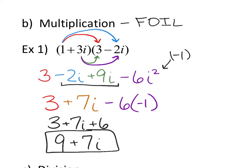A student asks: if you see i² in the work, can you immediately flip the sign of that term? Yes — I'm okay with you going straight from i² to the simplified form without writing the intermediate step, as long as you still show the i² before making that jump. That's a good shortcut once you understand why it works.